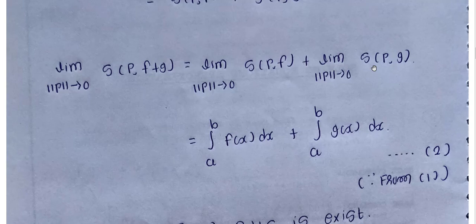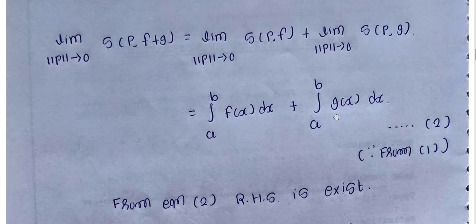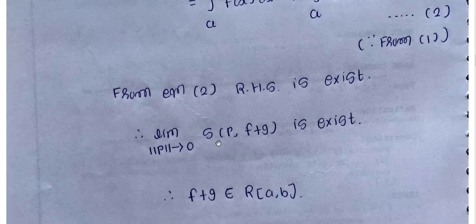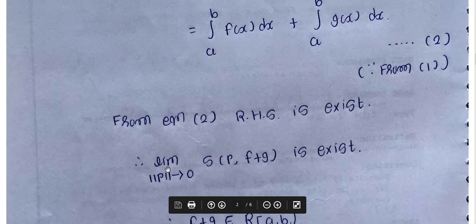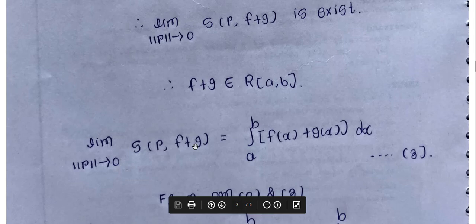Also, limit as norm P tends to 0 of S(P, g) equals the integral from a to b of g(x) dx, by equation one. This is equation number two. Since the right-hand side exists, the left-hand side — limit as norm P tends to 0 of S(P, f+g) — also exists. Therefore f plus g is Riemann integrable over closed interval [a,b], so f+g belongs to R[a,b].